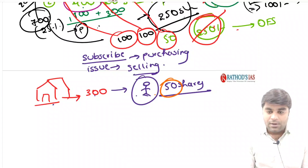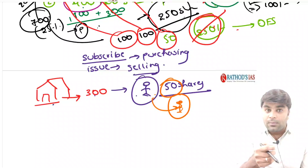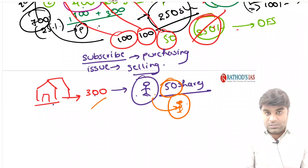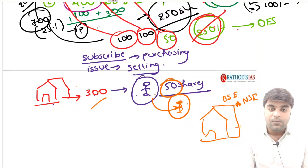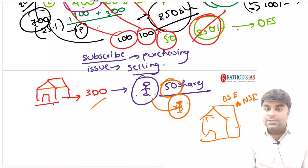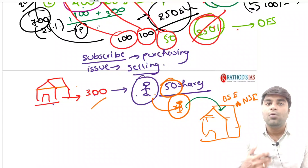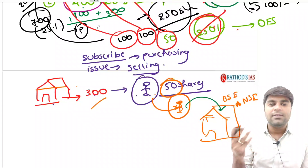This person holds 50 shares over a particular period of time and after some time, he wants money urgently and wants to sell off those shares. Where can he sell? There is a secondary market — the Bombay Stock Exchange and National Stock Exchange. Once the company issues shares for the first time in the IPO, the company gets listed on BSE or NSE, so that this person can later sell his purchased shares in the secondary market.